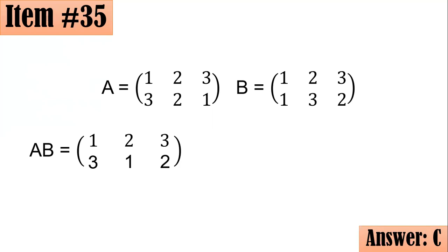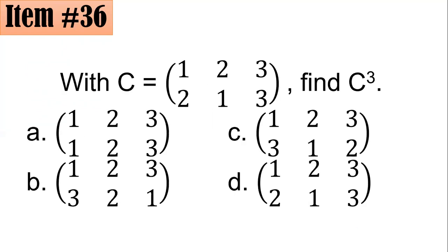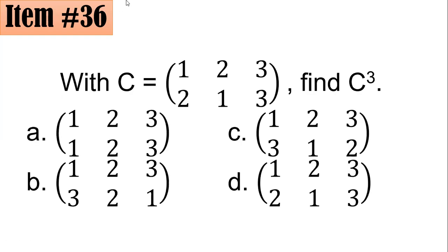All right, I hope you're having a great time so far. Number 36. With C equals this permutation, what do you think is C cubed? Or this means C∘C∘C, or C composition C composition C. Did you go for A, B, C, or D?